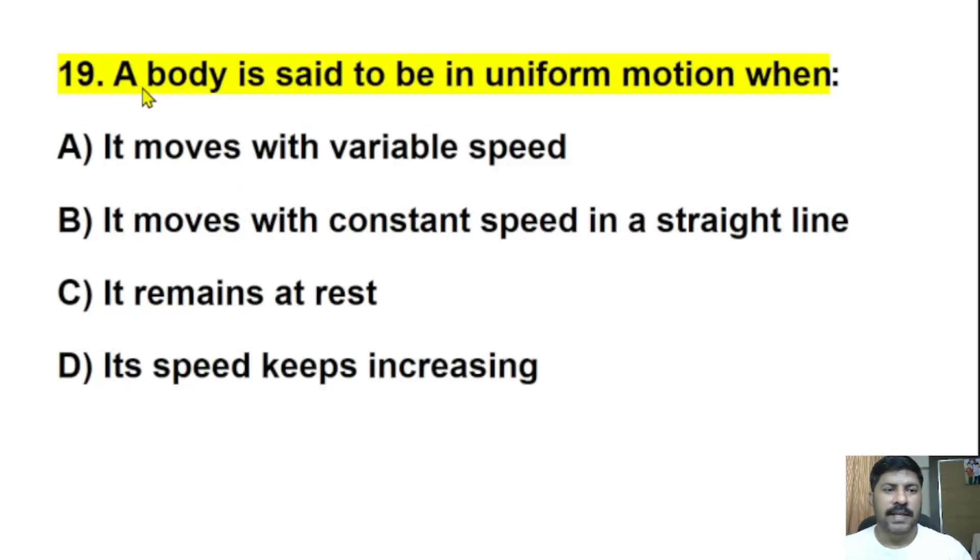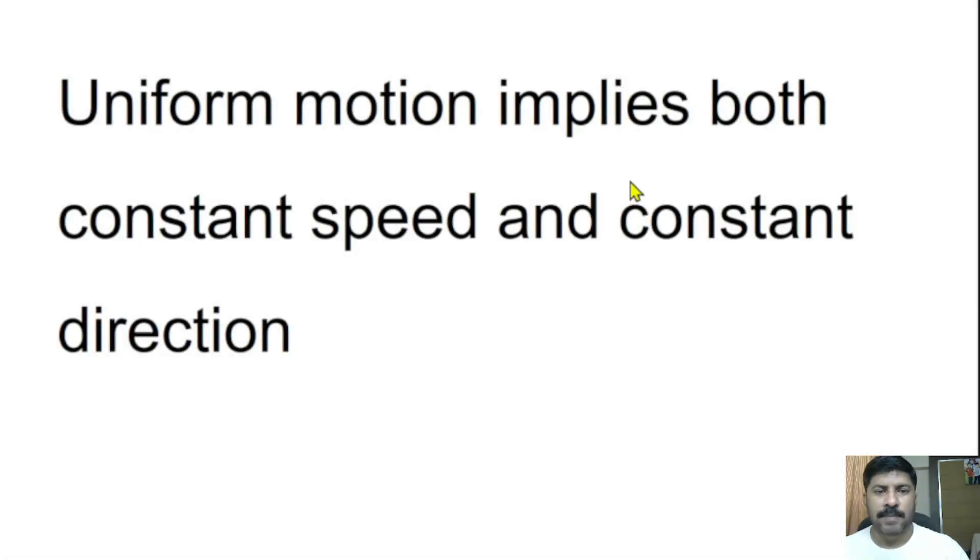Nineteenth question: A body is said to be in uniform motion when? It moves with variable speeds, it moves with constant speed in a straight line, it remains at rest, or its speed keeps increasing? The correct answer is it moves with constant speed in a straight line. Uniform motion implies both constant speed and constant direction.